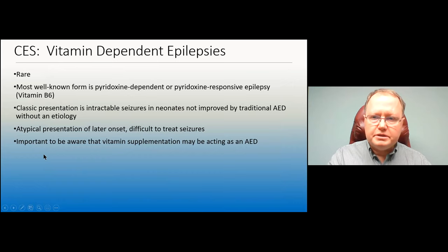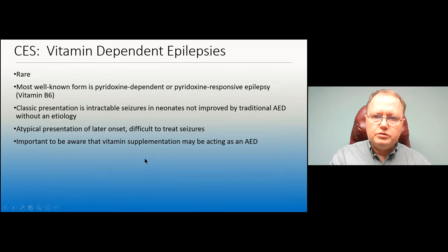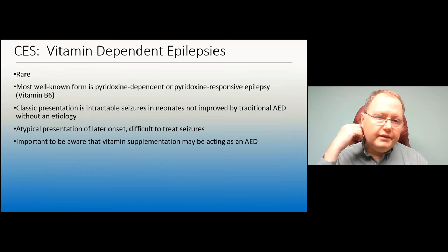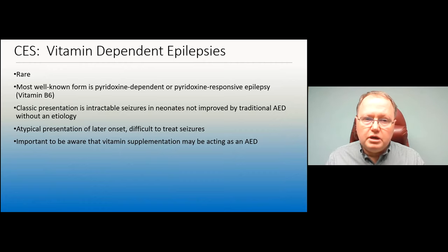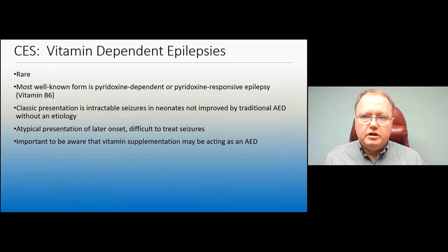Pyridoxine-dependent epilepsy is rare but frequently appears as a test question. These neonates come in seizing, with a terrible EEG, and fail to respond to one, two, or three seizure medications. When that pattern emerges, think pyridoxine. If they're on EEG monitoring, give 100 mg IV pyridoxine, and over the next 30 minutes the EEG will normalize. Their seizure medicine for the rest of their life turns out to be 100 mg of pyridoxine daily — and they'll likely never have a seizure again.